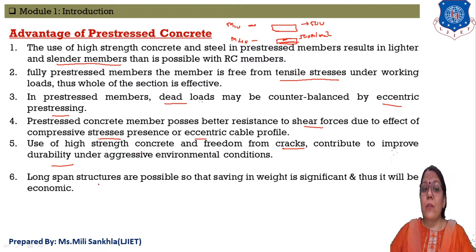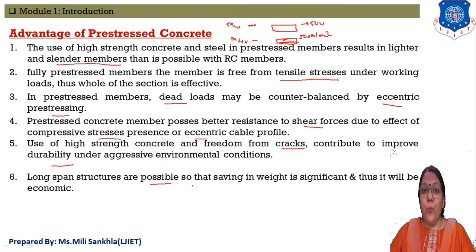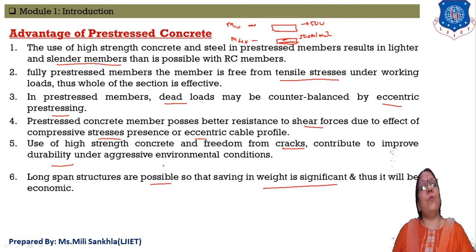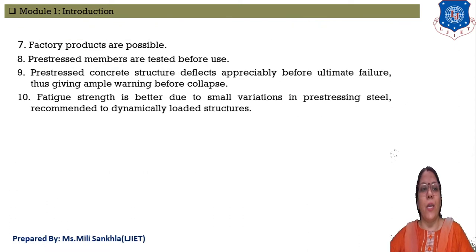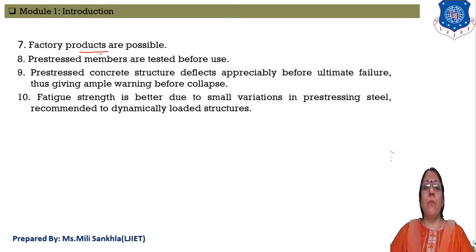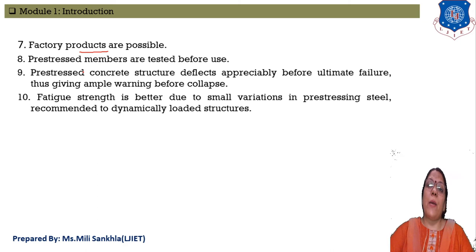Long-span structures such as bridges are possible to construct with prestressed concrete, and weight is significantly minimized because high-strength steel and concrete allow a reduced section size. Factory production is also possible — if mass production is required, it can be achieved with prestressed concrete members, particularly with pre-tensioning. Prestressed members are also tested before use, so we know the strength of the member before application.